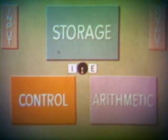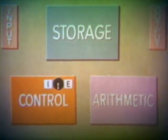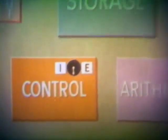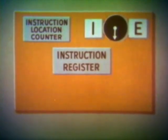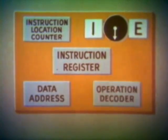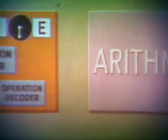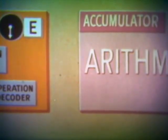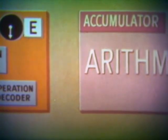Let's follow a typical cycle by means of a simplified flow diagram. In addition to the cycle switching device, the control unit contains an instruction location counter, an instruction register, a data address register, and an operation decoder. The arithmetic unit contains an accumulator — a register used for temporary storage of the results of computations.